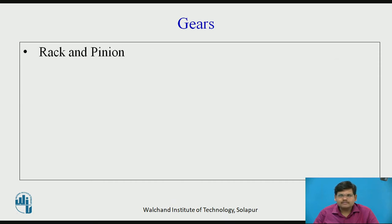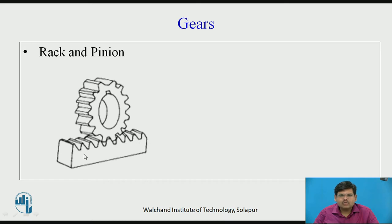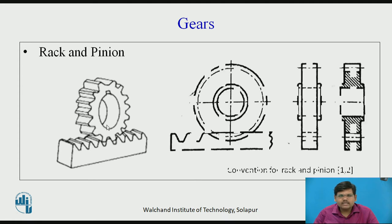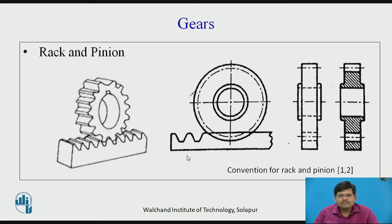Then, rack and pinion. Here you can see a long shaft, one end of which has teeth, and on that rotates a gear. This is called the rack and this is called the pinion. This type of arrangement is used when you want rotary motion to be converted into linear motion, or linear motion to be converted into rotary motion. When the pinion rotates, the rack moves to and fro; in reverse, when the rack moves to and fro, the pinion rotates in either clockwise or anti-clockwise direction. The conventional representation shows the rack and the pinion in side view and conventional view. These are the main types of gears used in most applications, with major applications seen in automobiles.